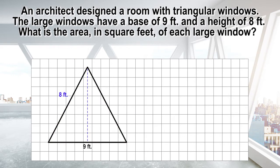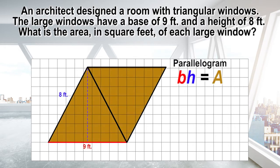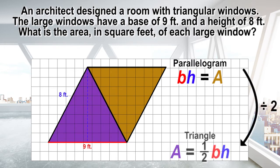Another way to find the area would be to create a parallelogram by pairing the triangle with a second congruent triangle. The two triangles together create a parallelogram with a base of 9 feet and a height of 8 feet. The formula for the area of a parallelogram can then be used and divided by 2. The area of this parallelogram would be 9 feet times 8 feet, equals 72 square feet.